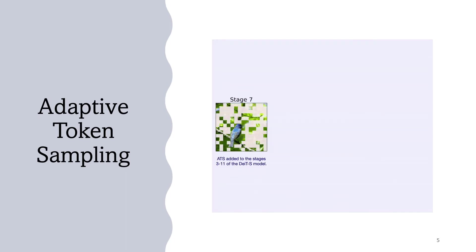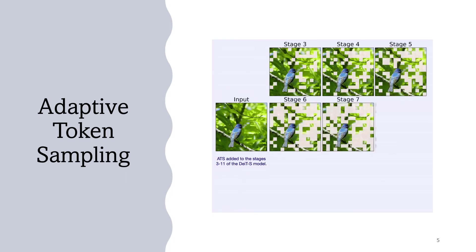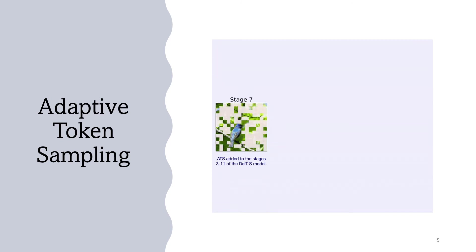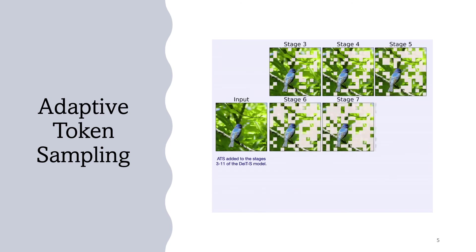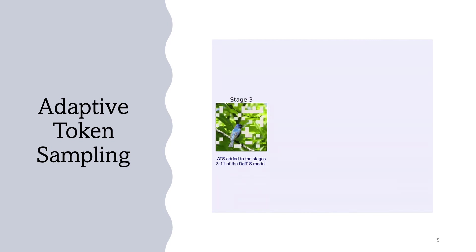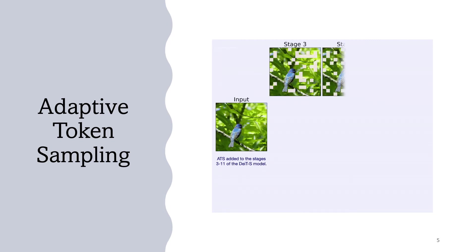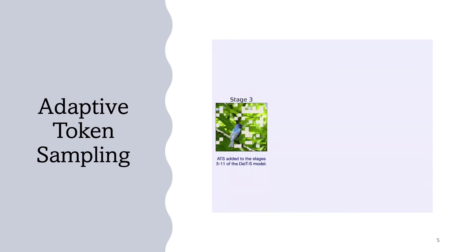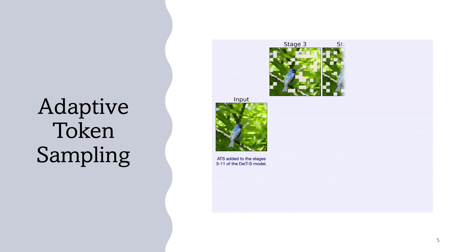To analyze the effectiveness of our module, we added our ATS module to multiple stages of the DeiT-Small model. You can observe the gradual token sampling procedure of this adaptive model. As can be seen, the sampled tokens in the final stage of the model are mainly related to the object that should be classified, while the background tokens are discarded.